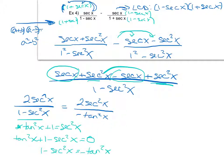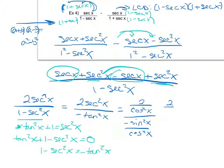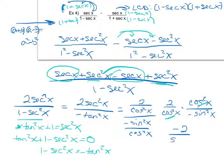I rewrite the function as two secant squared x over negative tangent squared x. Since secant squared is one over cosine squared and tangent squared is sine squared over cosine squared, I rewrite in terms of sines and cosines: two over cosine squared x, divided by negative sine squared x over cosine squared x. Dividing fractions means multiplying by the reciprocal, so I get two over cosine squared x times cosine squared x over negative sine squared x. The cosine squareds cancel, giving me negative two over sine squared x, which is negative two cosecant squared x — my simplest form.